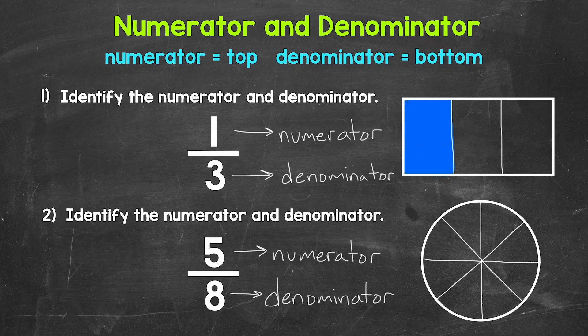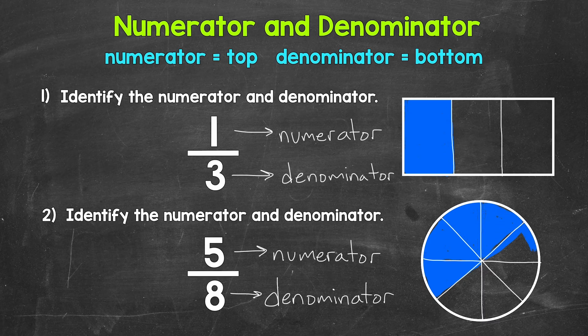Let's move on to the numerator now, which is 5. So we need 5 equal parts out of 8 total equal parts shaded in. So 1, 2, 3, 4, 5. And that's it — there's 5 eighths, 5 equal parts out of 8 total equal parts.